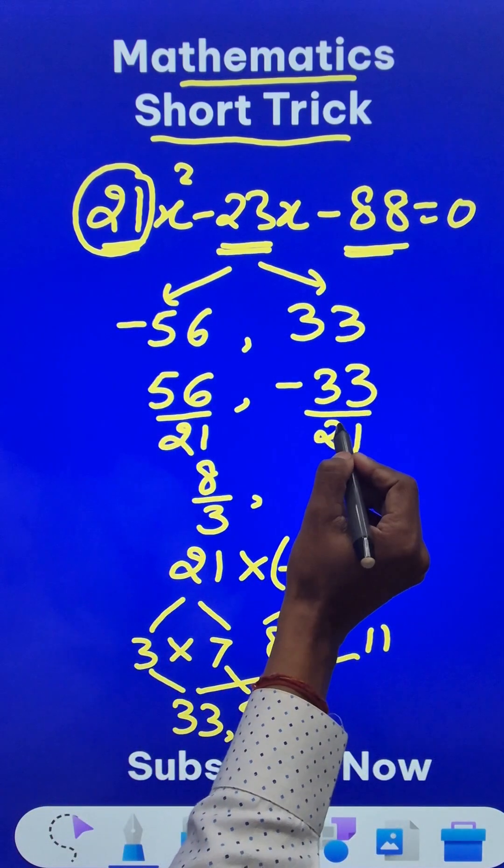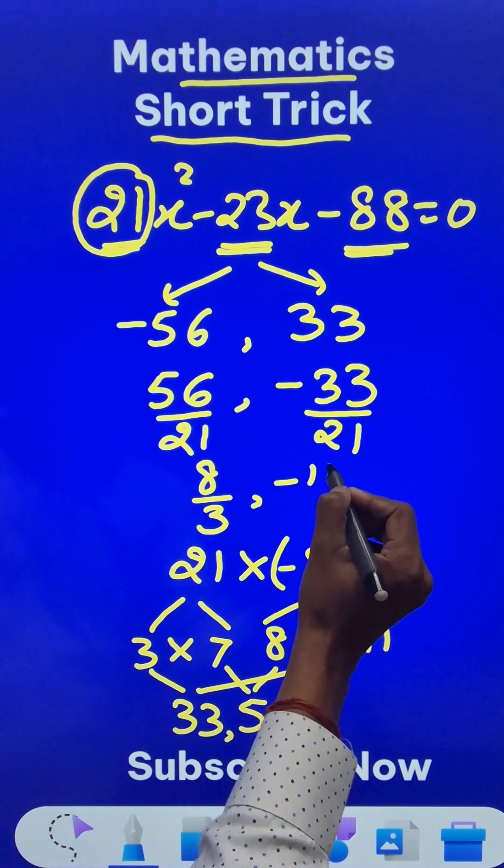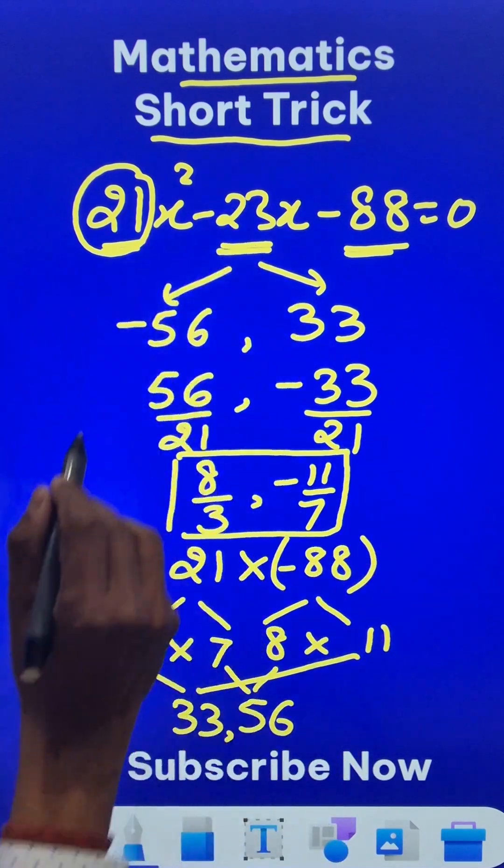And the other one is negative 11 upon 7 if you cancel the 3. Negative 11 upon 7. So here are the roots of this quadratic equation.